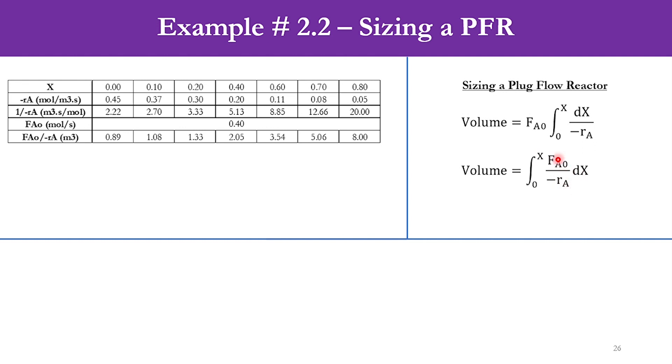We know the value of FA0 over minus RA and we know the value of x. To solve this integral, there are different techniques available, but today we will use the five-point quadratic formula.